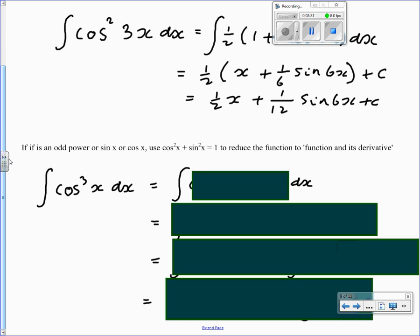If on the other hand you've got an odd power of sine x or cos x, you can use one of the identities cos squared x plus sine squared x equals 1 to reduce this to the type we had before - a function of a function. In an exam you would be given a hint, you would be told what identity to use.